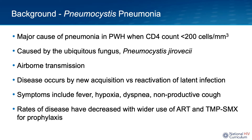Symptoms seen with PCP include fever, dry cough, dyspnea that can be progressive the longer someone has untreated PCP, and hypoxemia eventually leading to hypoxic respiratory failure. With the widespread use of combination antiretroviral therapy to treat HIV, as well as trimethoprim-sulfamethoxazole for PCP prophylaxis, the rates of PCP have decreased around the world.